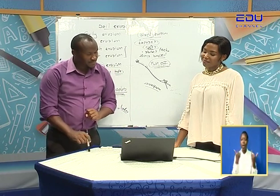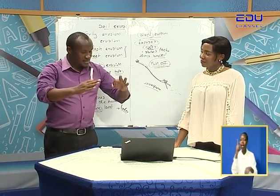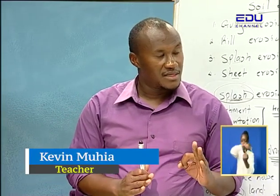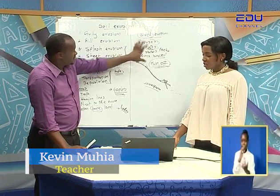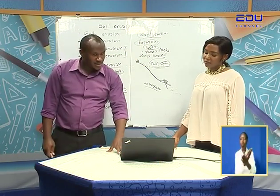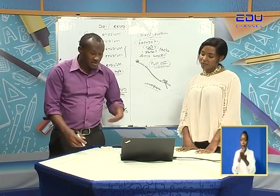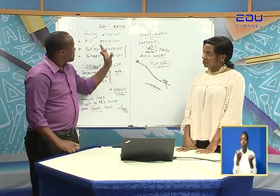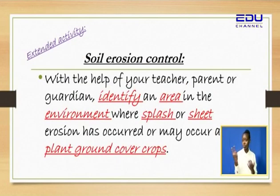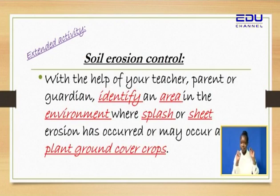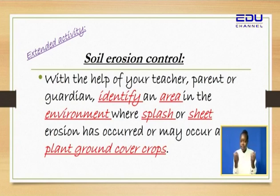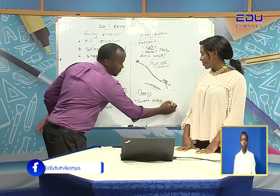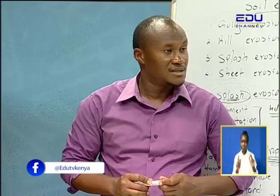Your last assignment: the first one — more examples of climbing fruit trees. The next one — differences between sheet erosion and splash erosion. And lastly, with the help of your teacher, parent, or guardian, identify areas where these two erosions may occur or have occurred, and plant cover crops. Last time we talked about cover crops — grass is the best example, and we have sweet potatoes and potato vines.